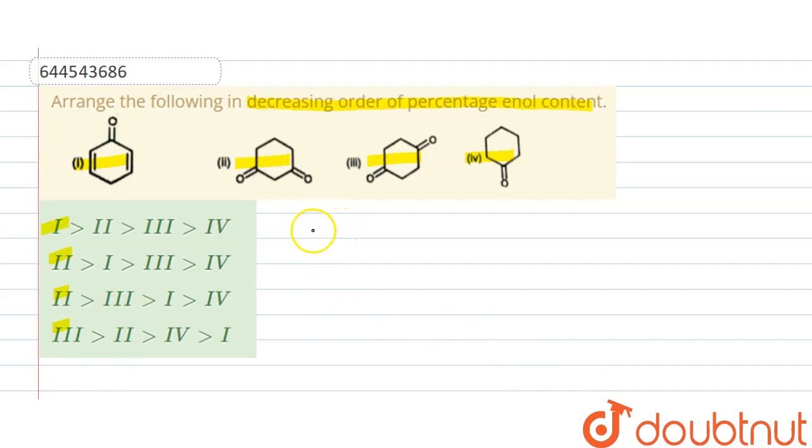An example is taken. CH2-C double bond O-CH3. Here this bond will be transferred and this will also be transferred, so CH2 double bond C-OH-CH3. This is the enol form.